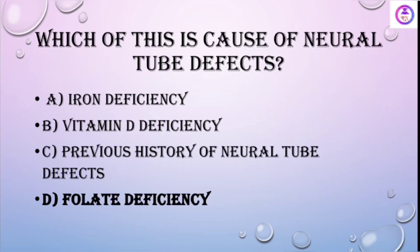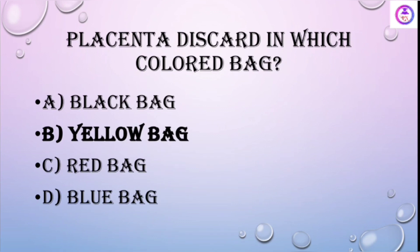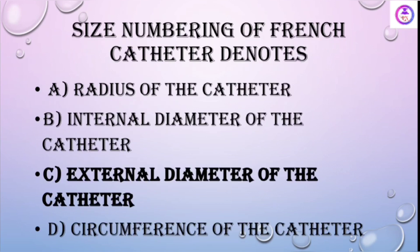Which of the following is a cause of neural tube defect? Folate deficiency. It is said that at the time of conception, if the body is deficient in folate (folic acid), there are chances of neural tube defects, which are midline congenital defects.